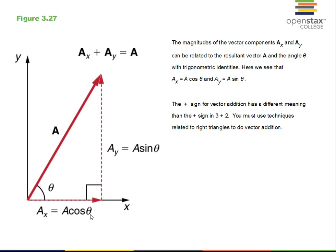The x-component of A is found by taking A multiplied by cosine of theta. Notice that if you rearrange — dividing both sides by A — you have Ax, the adjacent side, divided by A, the hypotenuse, which is the cosine function. So the adjacent side has a length of hypotenuse multiplied by cosine of theta.